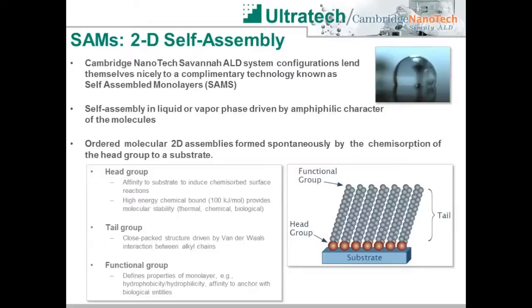A SAMS coating consists of three parts. The head group is chosen such that it will experience a strong, stable chemical bond to the surface of the item to be coated. The tail of the SAMS molecule is a long alkyl chain. As the SAMS molecule organizes on the surface, Van der Waals interactions drive adjacent alkyl chains into a close-packed arrangement. With the heads bonded to the surface and the tails well organized, the exposed surface is a dense packing of the functional group present opposite the head of the SAMS molecule. This functional group can be chosen from a variety of classes to impart hydrophobicity, hydrophilicity, oleophobicity, an affinity to anchor biological entities, or another desirable characteristic to the substrate surface.